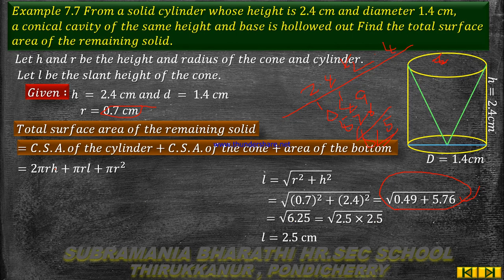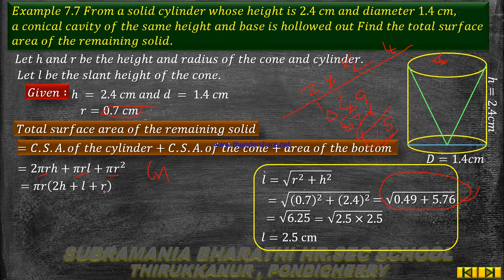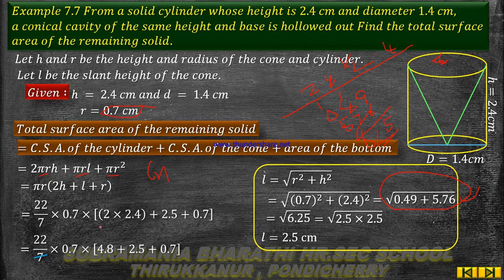Substituting values: πr(2h + l + r) = (22/7) × 0.7 × (2 × 2.4 + 2.5 + 0.7). This simplifies to 22/7 × 0.7 × (4.8 + 2.5 + 0.7), plus the area of the bottom circle (22/7) × 0.7 × 0.7.